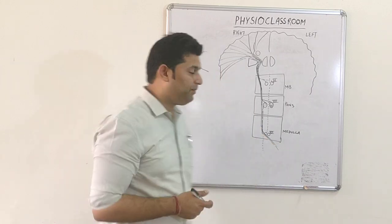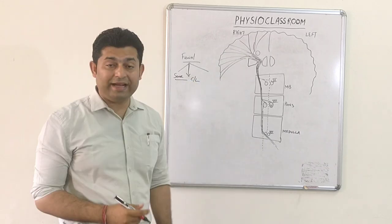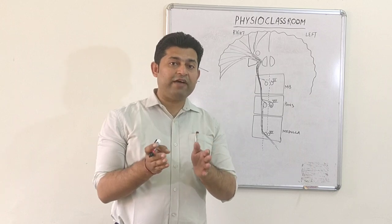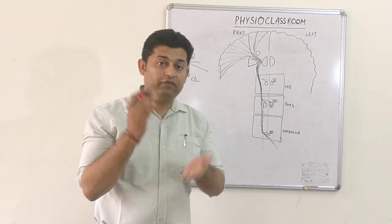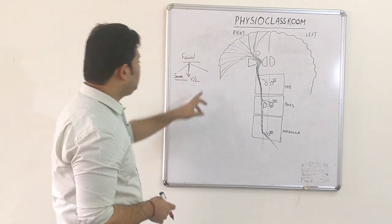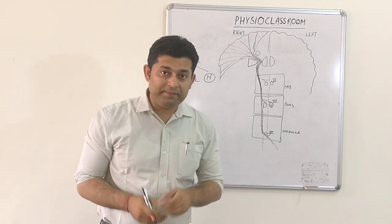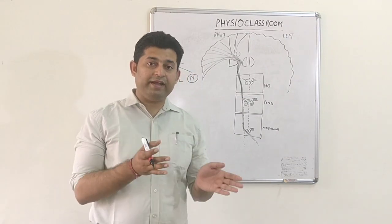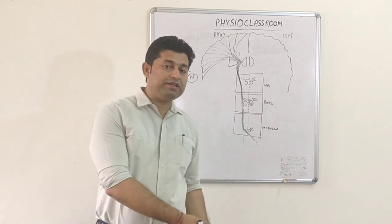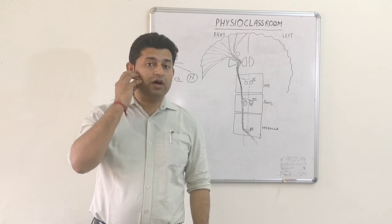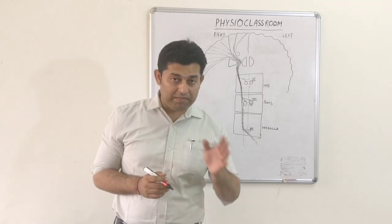The second observation is that the facial nerve involvement is contralateral to the side of hemiparesis. For example, the patient is having left hemiparesis but facial nerve involvement is on the right side. All these findings have value in determining the level of lesion. The third finding we may get is that the facial nerve is normal — there is no abnormality in the facial nerve.